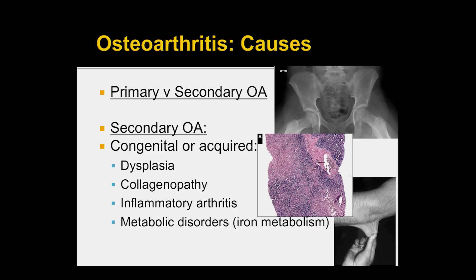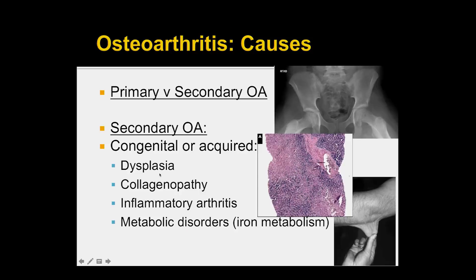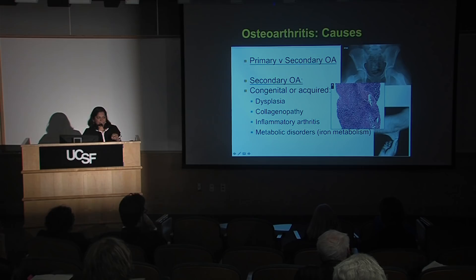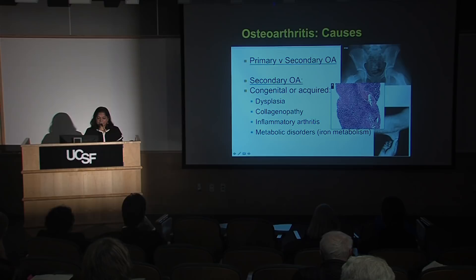Some — not a comprehensive list — of the causes of secondary OA include congenital or acquired abnormalities, such as dysplasias, meaning abnormalities in the shape of the femoral head or acetabulum. Collagenopathies, or problems with the actual structure of cartilage, can predispose to accelerated OA. Inflammatory arthritis, like rheumatoid arthritis, can also lead to accelerated cartilage failure. Metabolic conditions like hemochromatosis, where iron deposits within joint structures, also compromise biomechanical integrity.